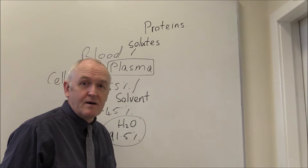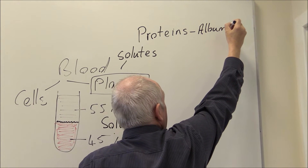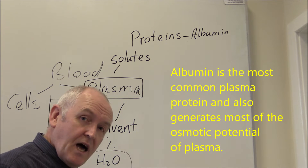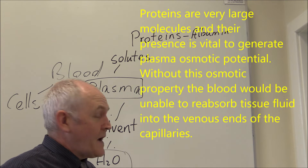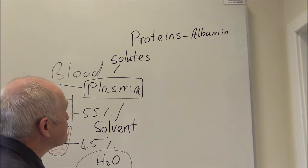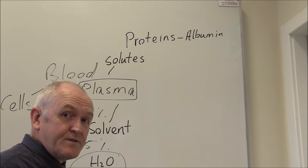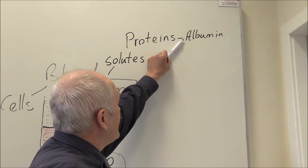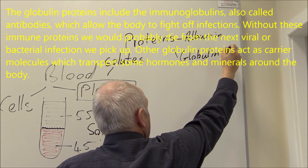The first solutes we can mention are proteins. In the plasma there are plasma proteins - proteins are the big molecules. For example, we have albumin, which is the most common, most ubiquitous protein in the plasma. It's a large molecular weight protein, so it's very osmotic - it generates osmotic pressure. The proportion of osmotic pressure generated by the plasma proteins is referred to as the oncotic pressure, which is very important for the reabsorption of tissue fluids at the venous end of the capillary.